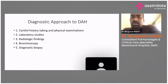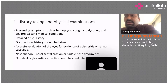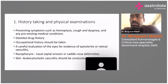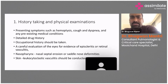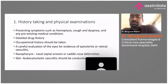We start with a careful physical examination. Whenever we have patients with DAH, we start with clinical history, which is important as in every disease. Whenever a DAH patient comes, we need to review all history of the patient, including drug history, occupational history, as well as typical symptoms that may present with hemoptysis, cough, dyspnea, or any pre-existing medical condition.